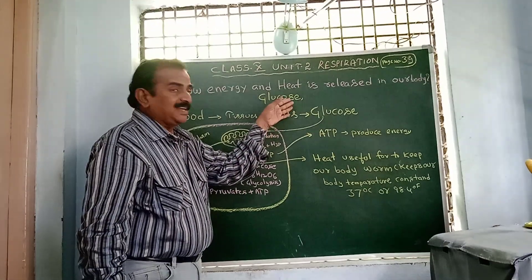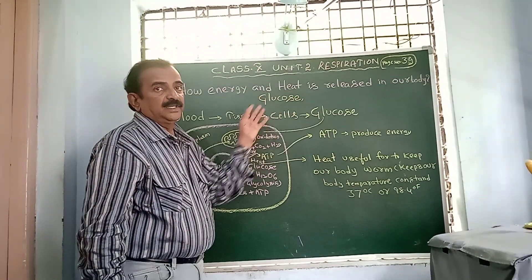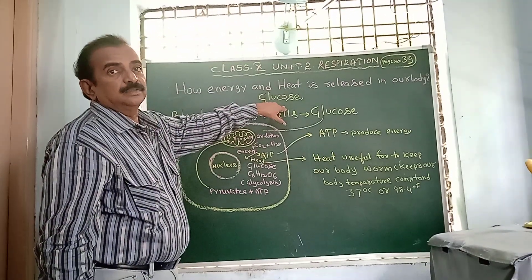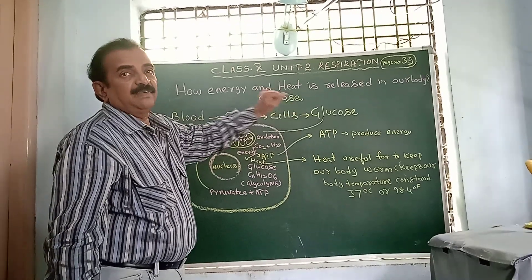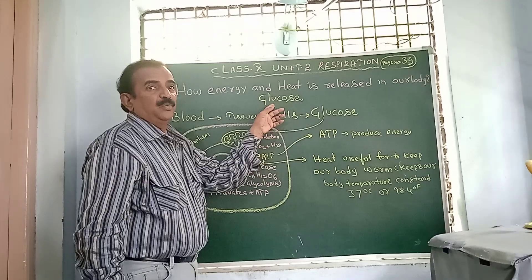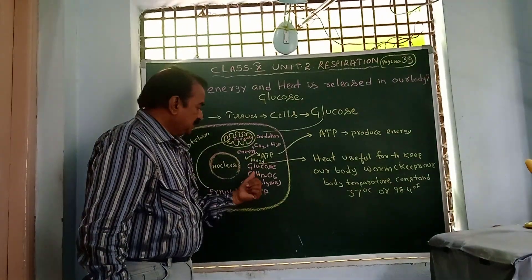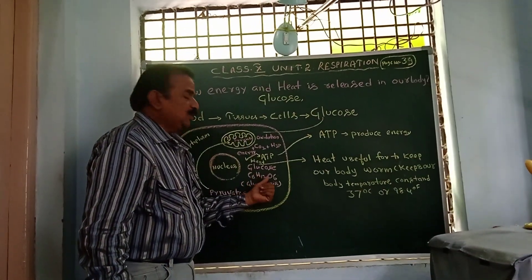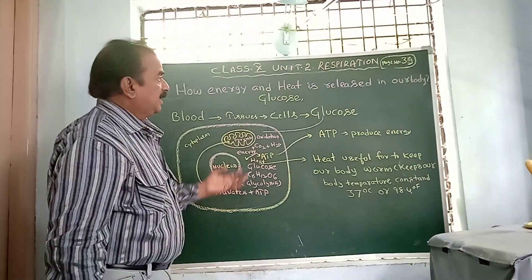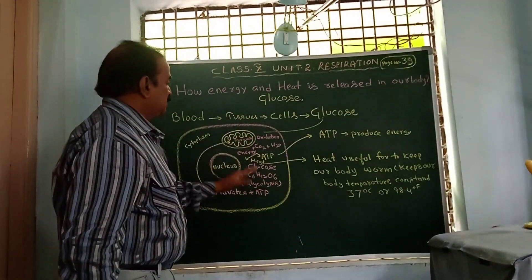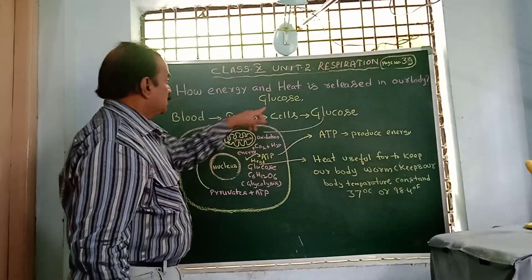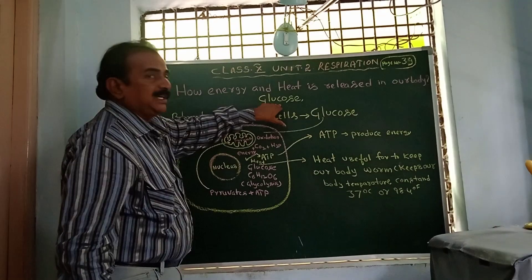Daily we are eating food and consuming carbohydrates. These carbohydrates are digested into glucose by means of our digestive system. Glucose is an organic compound with the formula C6H12O6, and it is a simple sugar. These simple sugar molecules produce energy in your body after digestion.